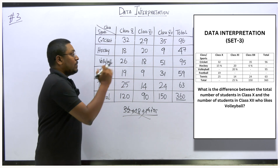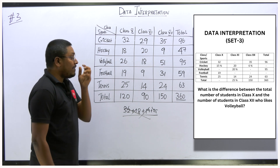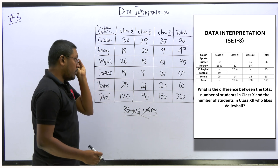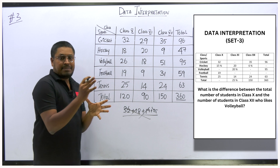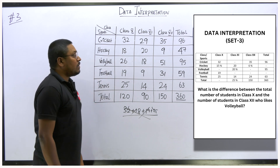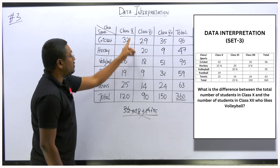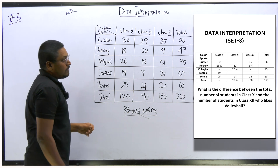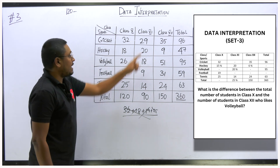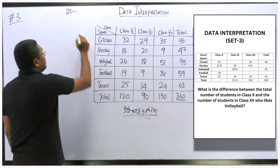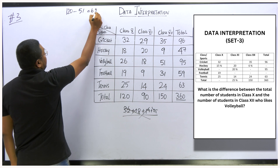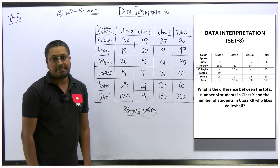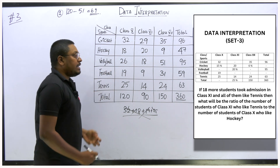Question 1: What is the difference between the total number of students in class 10 and the number of students in class 12 who like volleyball? Total students in class 10 is 120. Class 12 students who like volleyball is 51. So 120 minus 51 equals 69. The answer to question 1 is 69.